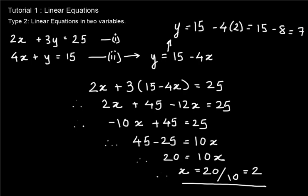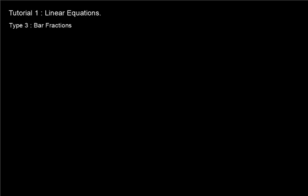Now let's take a look at type number 3. Type number 3 is bar fractions. A typical example of bar fractions which you would get is this: 2x minus 1 divided by 3 minus x minus 1 by 2 equal to 1, and you would be asked to solve for x. So the very first step you do when you see something like this is to put the brackets to the numerators of every fraction you encounter.